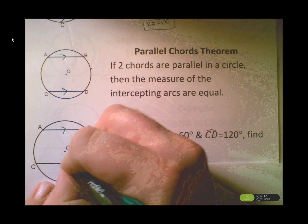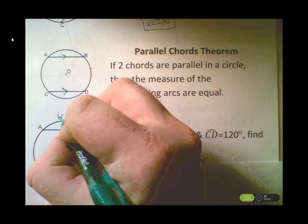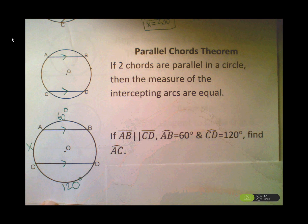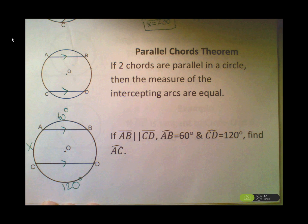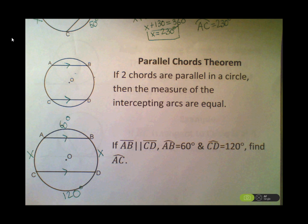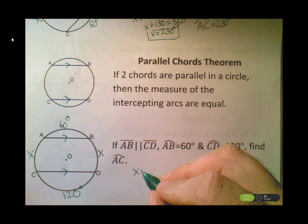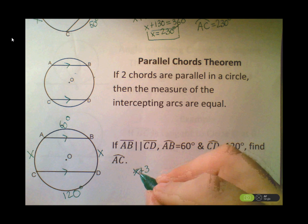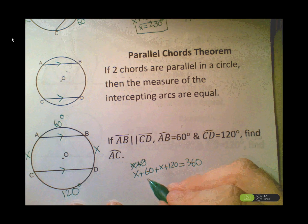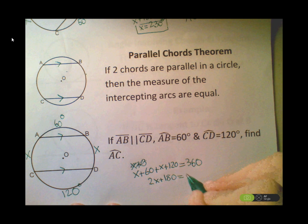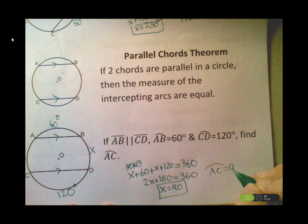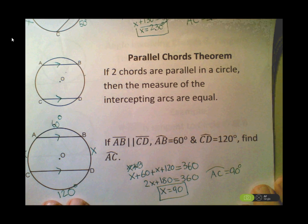Example: AB is parallel to CD. Arc AB is 60 degrees and arc CD is 120 degrees. Find the measure of arc AC. I'll put x there. By the Parallel Chord Theorem, if arc AC is x, then arc BD is also x. A circle has 360 degrees, so: x + 60 + x + 120 = 360. Working the algebra, x = 90 degrees. So arc AC is 90 degrees.